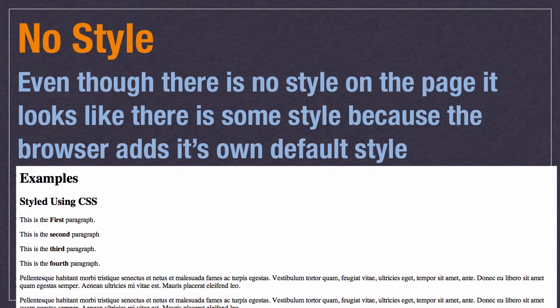If you put out a basic HTML page and look at it, there actually looks like there's some style. The first element that says 'examples' is an h1, 'style using CSS' is an h2, and the others are paragraphs with a bold element applied to some of them. That's because browsers add their own default styles automatically — but there's a big caveat.